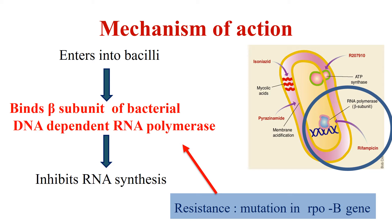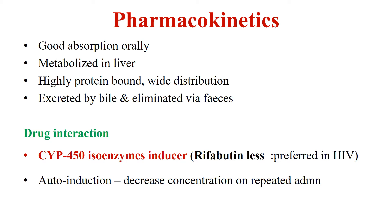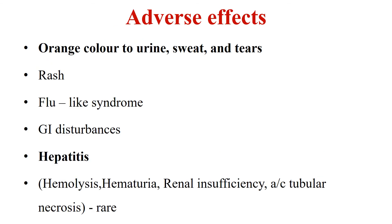Rifampicin has good oral absorption. It is metabolized in the liver, excreted by bile, and eliminated through feces. It is a highly protein-bound drug with wide distribution in the body. Rifampicin is a very potent cytochrome enzyme inducer — it induces the metabolism of other drugs and leads to their therapeutic failure. For example, if you administer rifampicin along with oral contraceptive pills, rifampicin induces the metabolism of oral contraceptives causing therapeutic failure. For this reason, rifabutin is preferred in HIV patients, as it is a less powerful enzyme inducer and does not induce the metabolism of other HIV drugs.